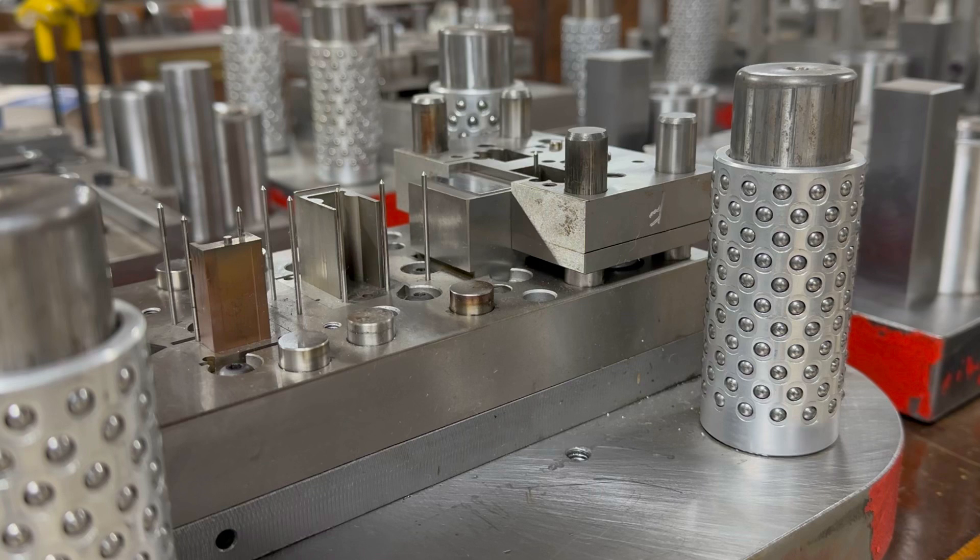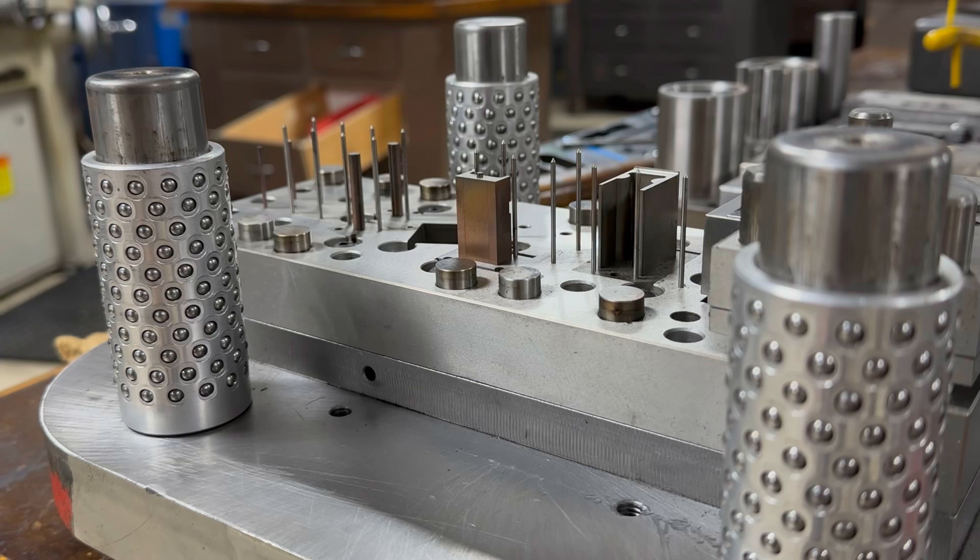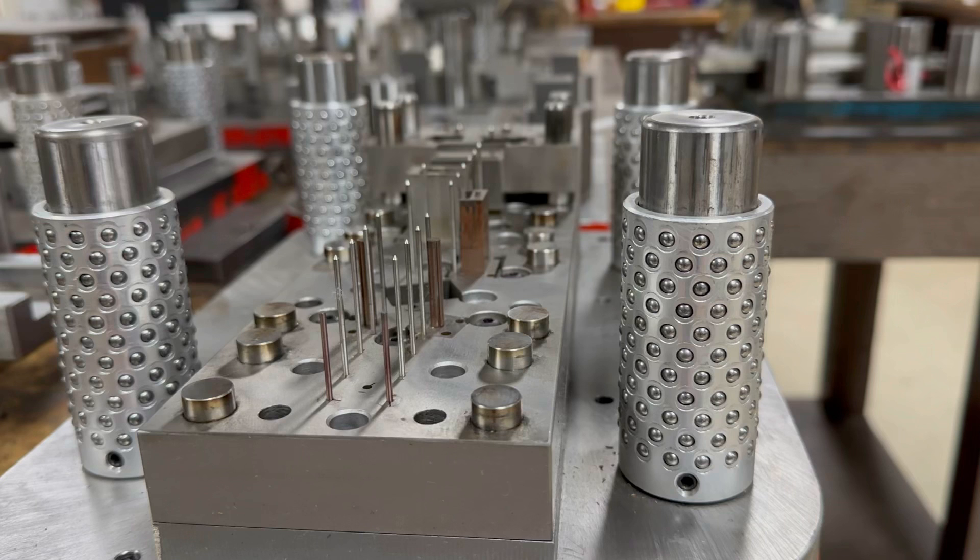Most punches, dies, and forms are made with the wire EDM machine. We can now build, maintain, and replace components much more rapidly in comparison. Stamped parts can be manufactured at a lower price, which is then passed on to the consumer.